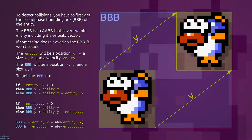The broadphase bounding box is a bounding box that covers the entire entity, including its velocity vector. If something does not overlap the broadphase bounding box, it will not collide.